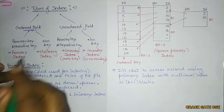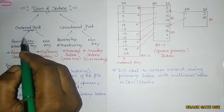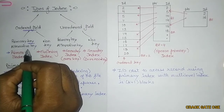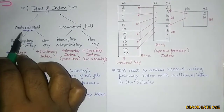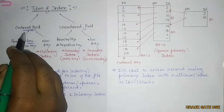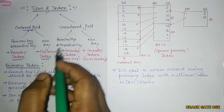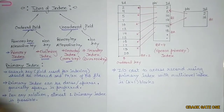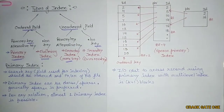The first thing we need to consider is the field, and another is the key. If the field is ordered (sorted) and the field is a primary key or alternative key, then it is known as primary index. If it is ordered but not a key, then it is clustering index. If it is unordered and the field is a primary key, then it is secondary index over key. If it is unordered and not a key, then it is secondary index over non-key.